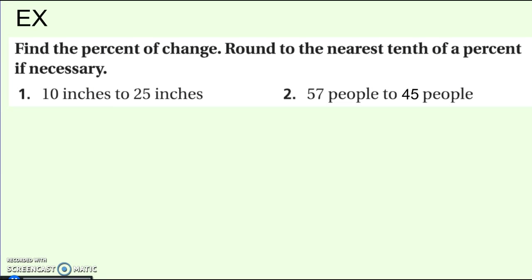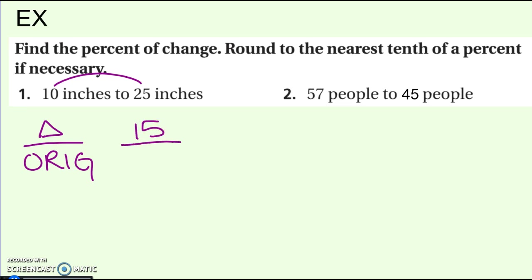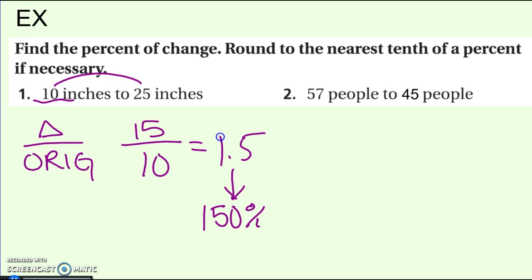Here are some examples. Find the percent change if something went from 10 inches to 25 inches. I have to find change over original. The change here went up by 15, and the original amount is what it started at — 10. Divide those to get a decimal, then convert it into a percent by moving it over two places. Because this went up, it's a 150% increase.